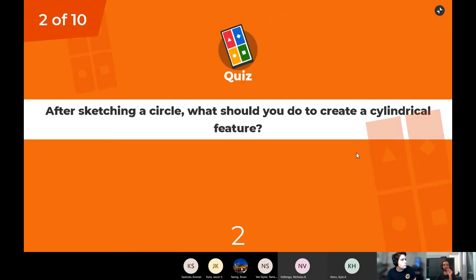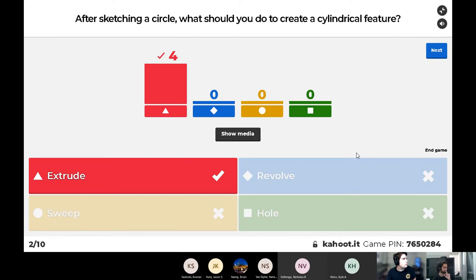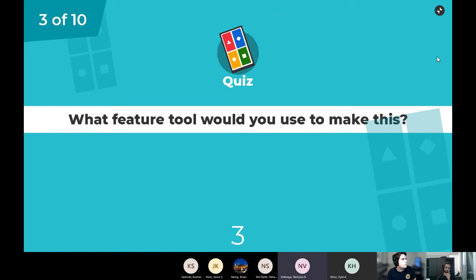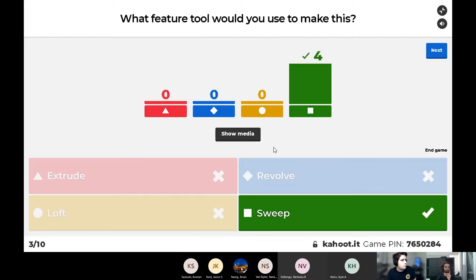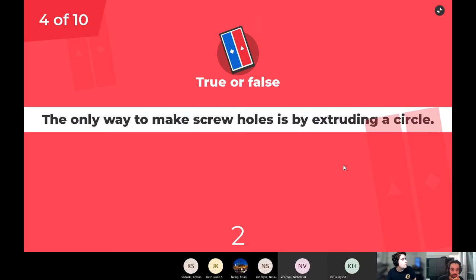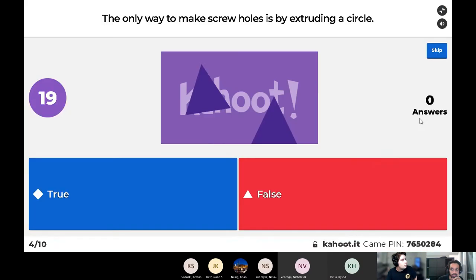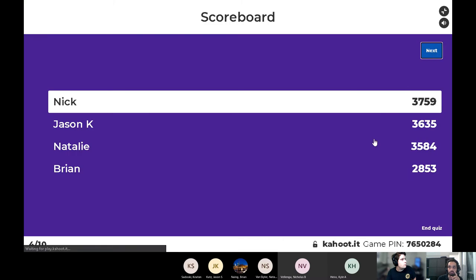After sketching a circle, what should you do to create a... What feature tool would you use to make this? You would use a sweep. It's a cable. You would use a sweep. The only way to make screw holes is by extruding a circle. Is that true or false? You guys remember. You can make holes as well.